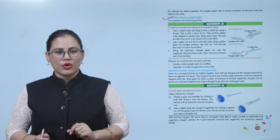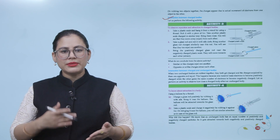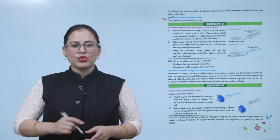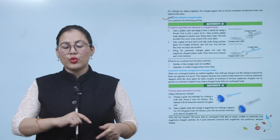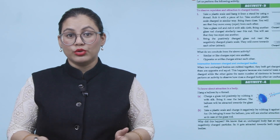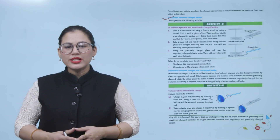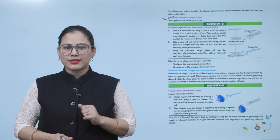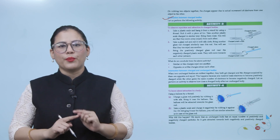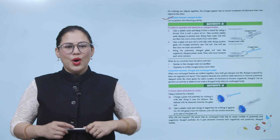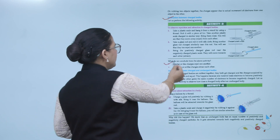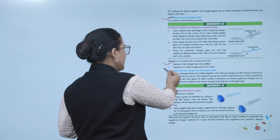Number two: take a glass rod and rub it with a silk rod. Bring another glass rod charged similarly near this rod — you will see they also repel one another. Number three: bring a positively charged glass rod and a negatively charged plastic scale close together — they will move towards each other and attract, because dono mein aapke opposite charges hain. What do we conclude? Similar or like charges repel one another; opposite or unlike charges attract each other.